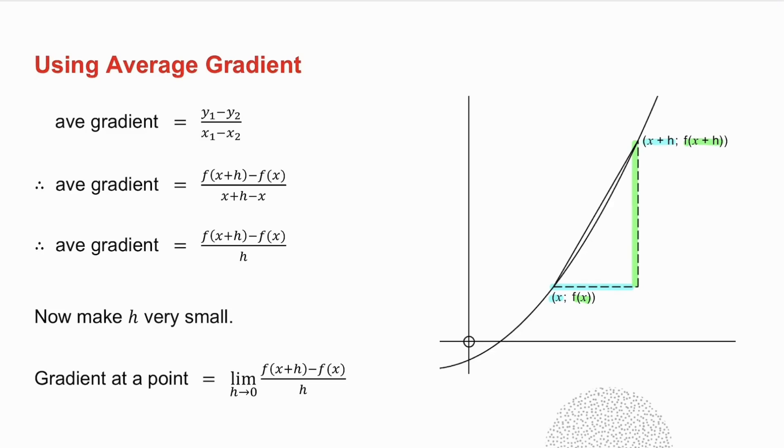So how do I take this point closer and closer to the other point? Well I make h very very small. And how do we show that you're making h very small? I write it as the limit as h tends to 0 of f(x+h) minus f(x) all over h. So this is finding the average gradient between the two points. And this is saying make the two points very very close to each other.